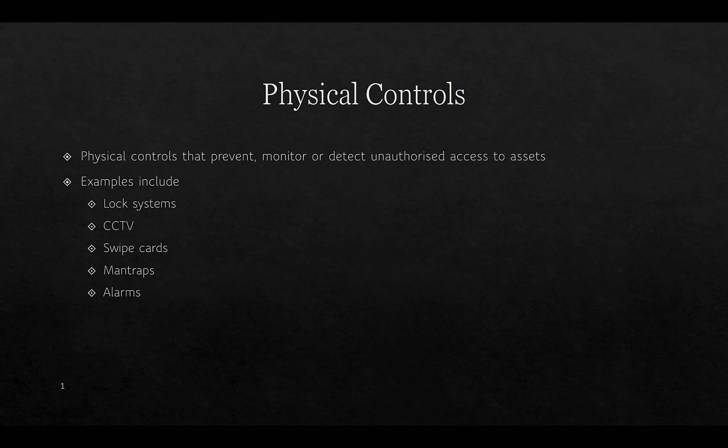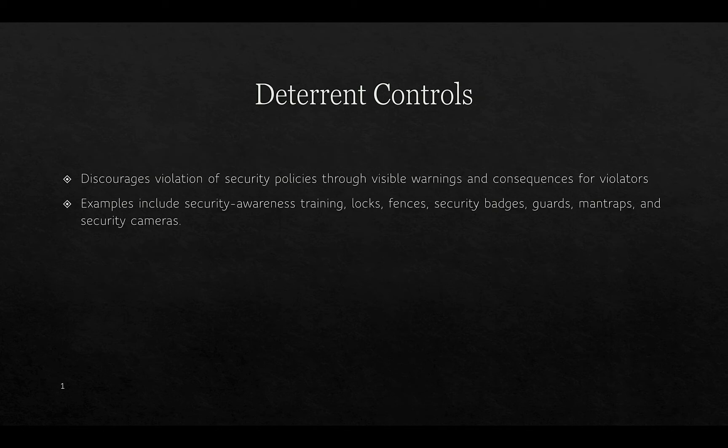If somebody is just swiping in, it's very easy to tailgate and get through a door. Deterrent controls discourage violation of security policies through visible warnings and consequences for violators. Examples include security awareness training, locks, fences, security badges, guards, man traps, and security cameras.